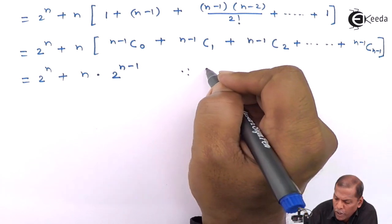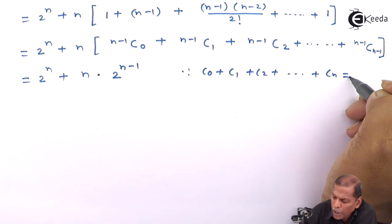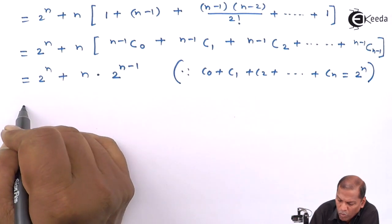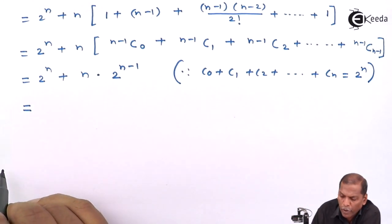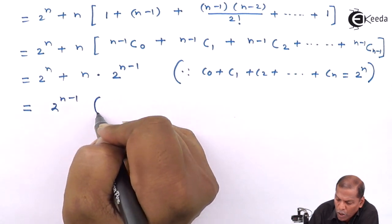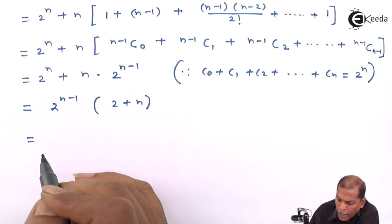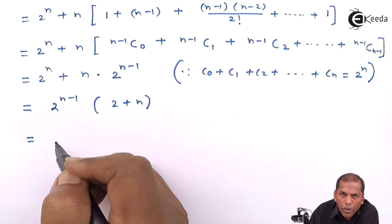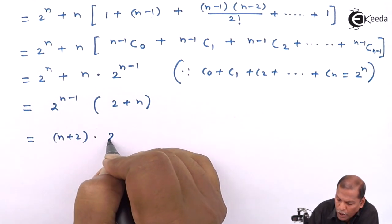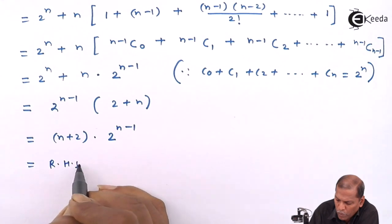Since we use Result 1 — C₀ plus C₁ plus C₂ up to Cₙ equals 2 raised to n — the inner sum equals 2 raised to n minus 1. Now from the full expression we take 2 raised to n minus 1 common, giving us 2 plus n in brackets, which rearranges to (n+2) into 2 raised to n minus 1.